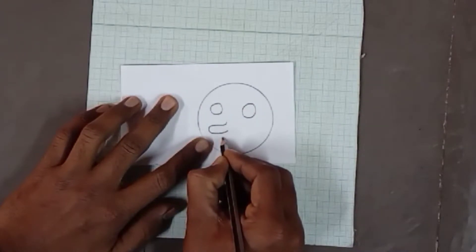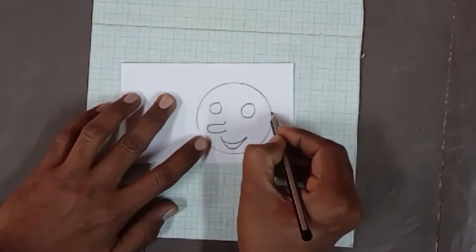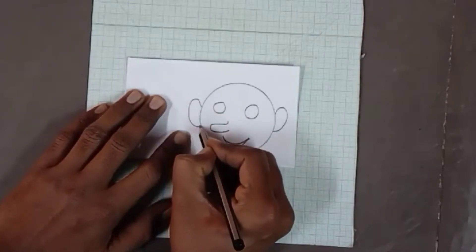Now make eyes, nose, mouth, ear etc on both the leaflets exactly one over the other.